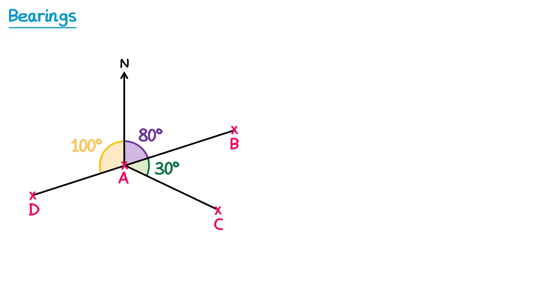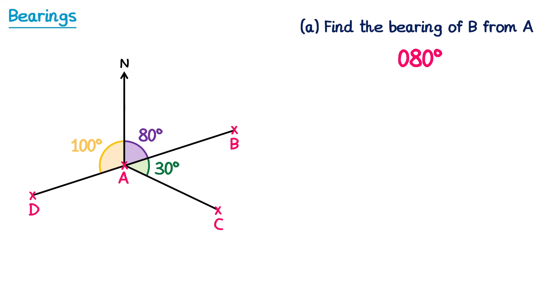Sometimes in bearings questions, you don't need a protractor at all because all of the information is given in the question. This is much more common on the higher paper. So here we have a diagram with lots of angles marked on, and we're going to find the bearing of B from A. Since it's B from A, we imagine we're at A, facing north and turning to face B. We're just going to turn through this angle here, which is already given. So the answer to this one is 080 as a bearing.